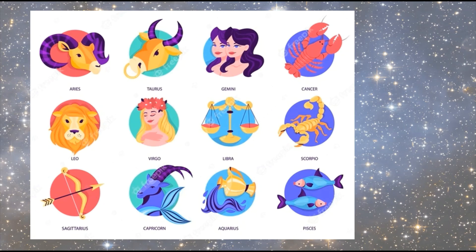Here are pictures of each zodiac sign: Aries is like a mountain goat, Taurus is a bull, Gemini is twins, Cancer is a lobster, Leo is a lion, Virgo is like a woman or mermaid. Libra, Scorpio is a scorpion, Sagittarius is half-human and half-horse. Capricorn is like a goat with the tail of a fish. Aquarius relates to water, and Pisces is a fish.